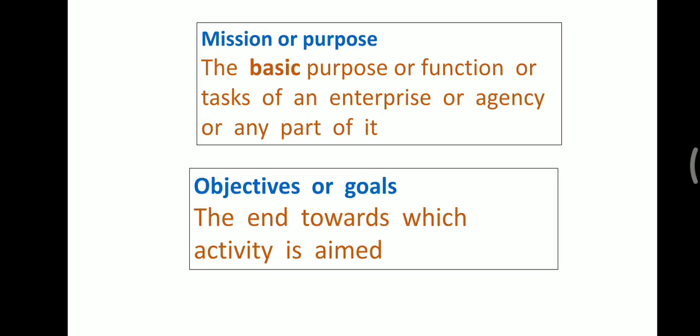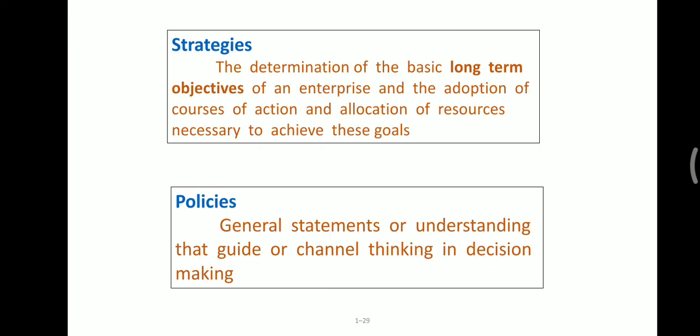Mission or purpose refers to what we want to achieve and the steps required to get there. Objectives or goals are the primary part of a company — every company has a goal and works toward achieving it. Strategies involve the determination of basic long-term objectives, adoption of a course of action, and allocation of resources necessary to achieve those goals. Policies are general statements or understandings that guide or channel thinking in decision-making.